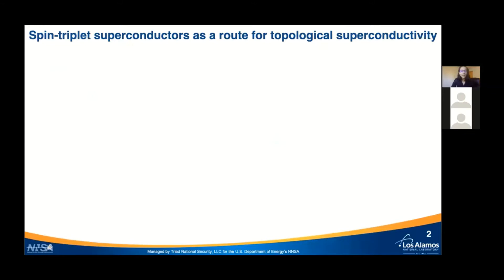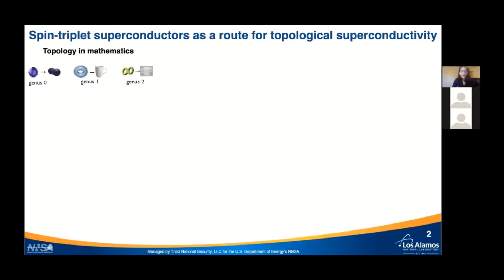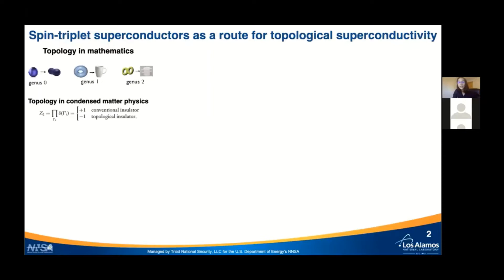Spin triplet superconductors are currently a route for topological superconductivity. But what is topological superconductivity? We need to go back a little bit to topology in mathematics. Topology is a major area in mathematics concerned with spatial properties that are preserved under continuous deformation. A donut, for example, can be continuously deformed into a mug — they are topologically the same. We have topological invariants that can classify objects into different classes.